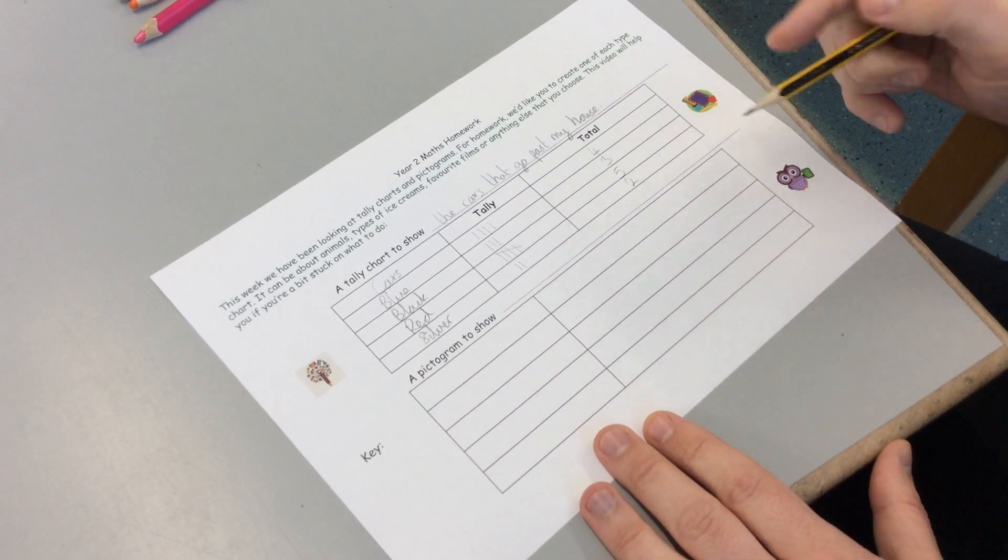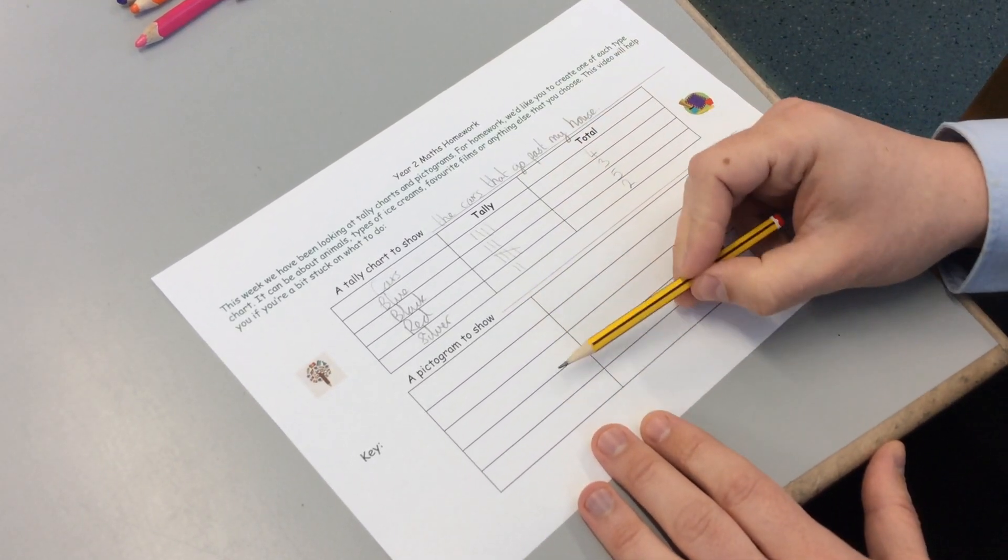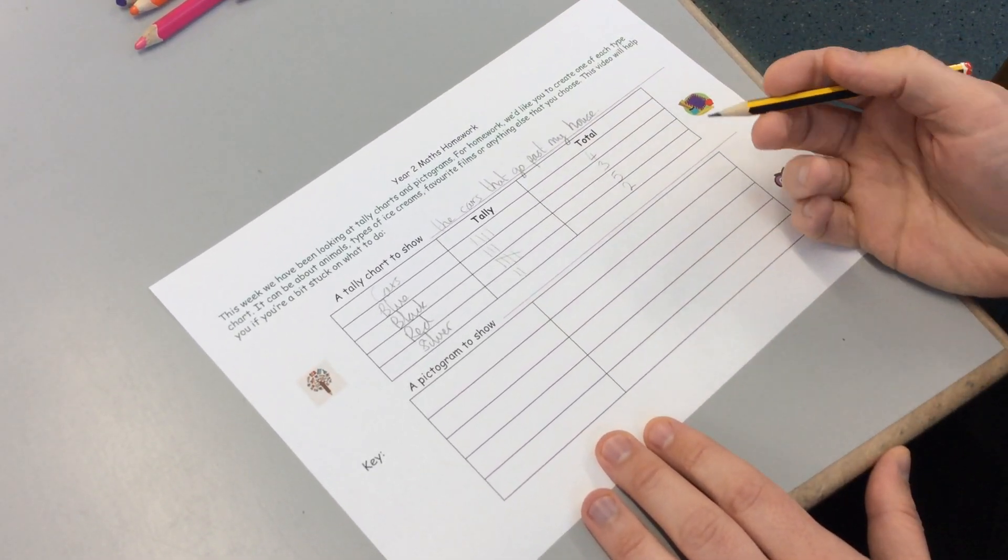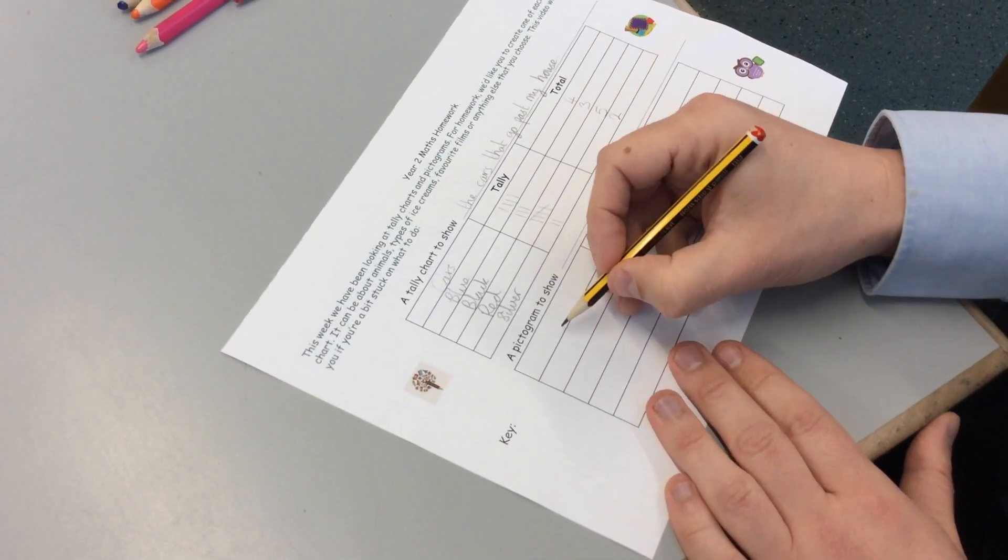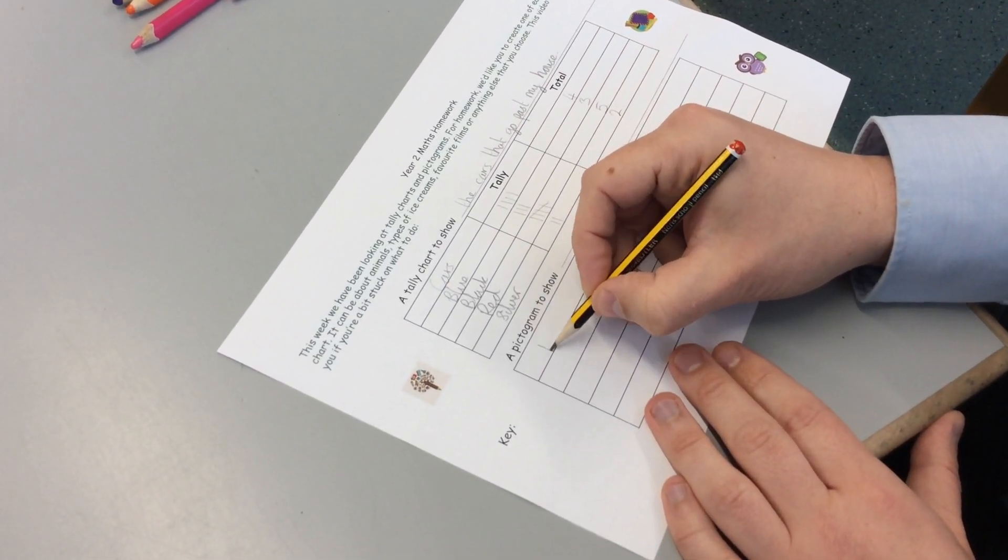For my pictogram, I could do the same sort of thing. I could do cars again. Or I might decide to do something a little bit different this time. Maybe I could ask the people in my family what they like. Maybe I could do fruit.